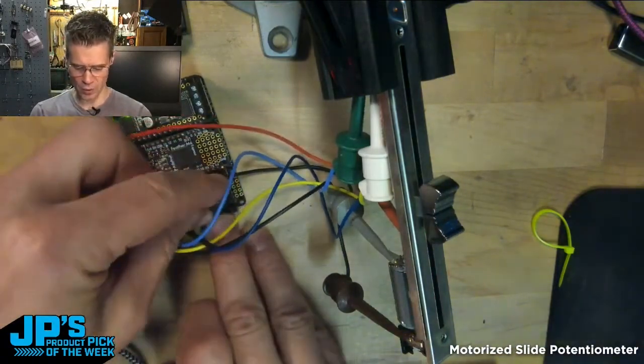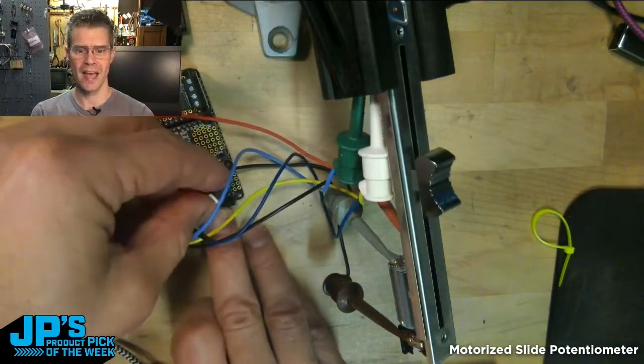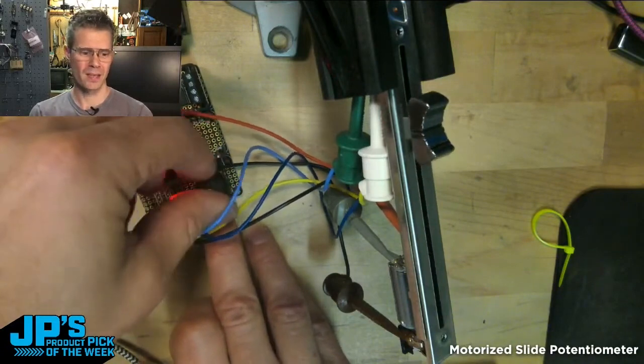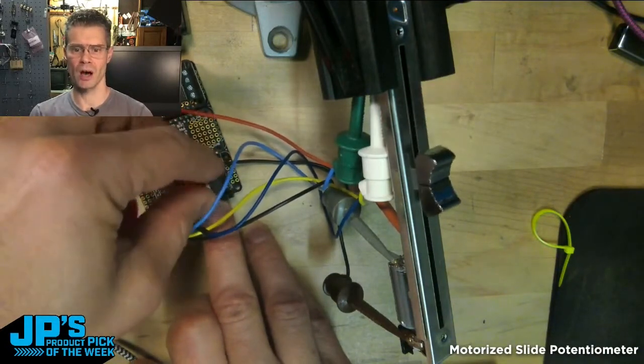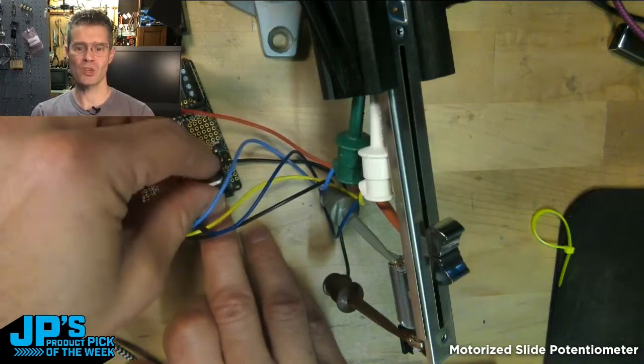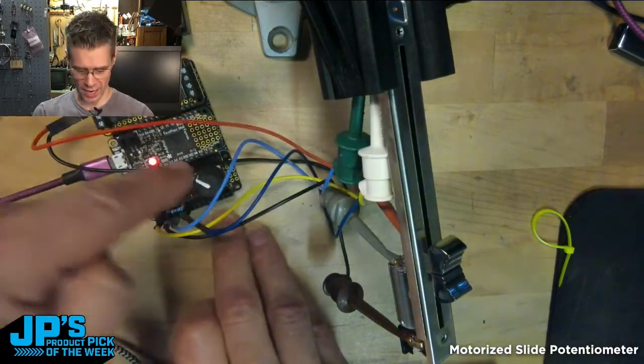I've set up my rotary encoder as a direct control there. So you can see as I turn the rotary encoder, I'm changing the position of the fader. I'm also using that as a stored position.